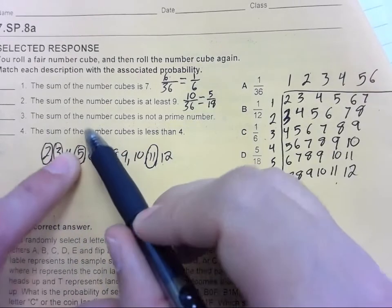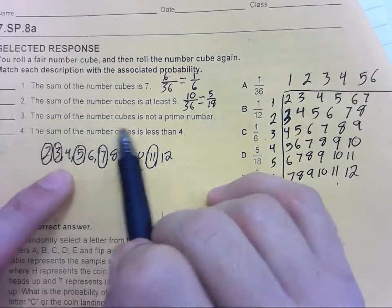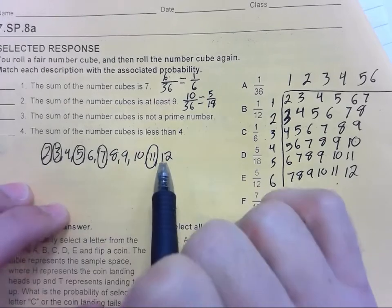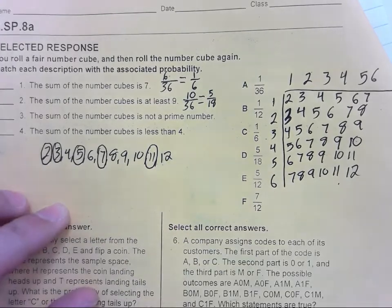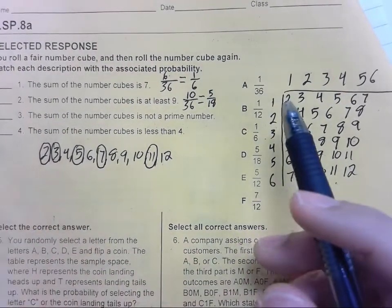Moving on, this is the one I was on when something happened. The sum of the number cubes is not a prime number. So here are all the sums and I've circled all of the prime numbers: 2, 3, 5, 7, and 11.